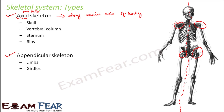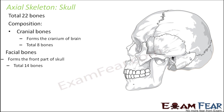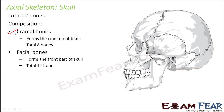Now we will talk about each part of the skeletal system in more detail. We will first talk about the skull and see which bones form it. There are a total of 22 bones which form the skull. These 22 bones are divided into two parts: cranial bones and facial bones. Cranial bones form the cranium — there are 8 cranial bones — and facial bones form the front part of the skull, totaling 14 bones. Eight plus fourteen equals 22.